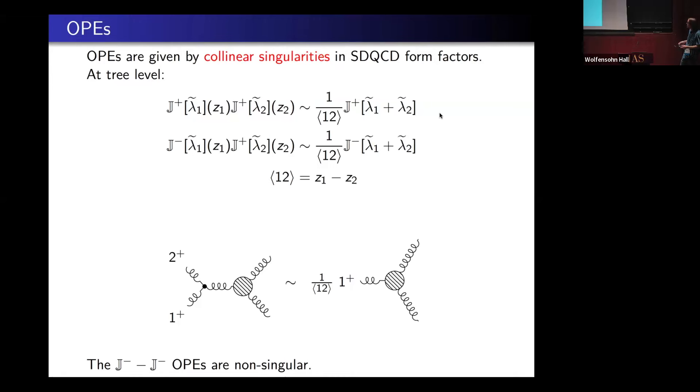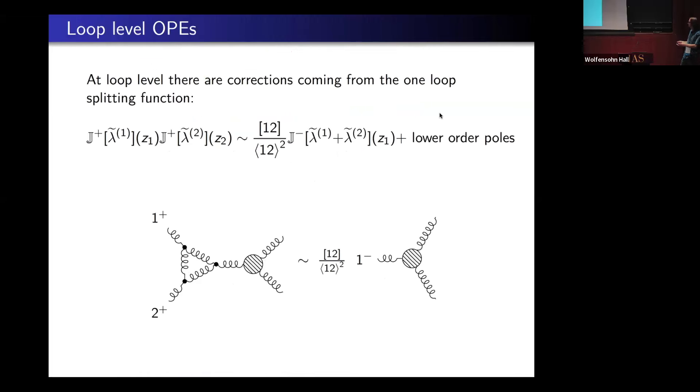I want to use this chiral algebra to compute loop-level quantities. So we have to include loop-level corrections to these OPEs. There's a one-loop correction to the splitting function, where if I have these two states become collinear, I'll produce a negative helicity state with a factor of one-two over one-two squared like that. So there's a one-loop correction to the OPE, where j plus j plus goes to one-two over one-two squared times j minus.